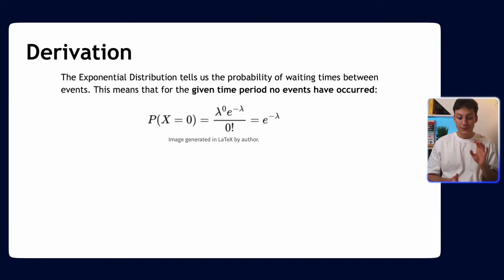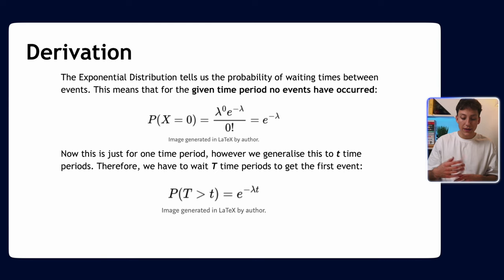You can even derive the exponential from the Poisson. We start by assuming that in a given time period we've had no events. In this case x equals zero. Given we've had some time period t go past, we've had no claims, so that's zero. This means we get e to the minus lambda—that's the probability of getting nothing in our time period. We can generalize this to t time periods, so we multiply by t.